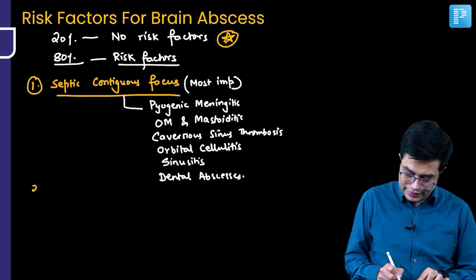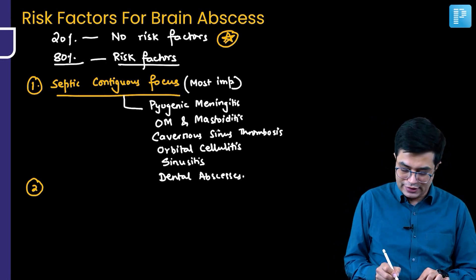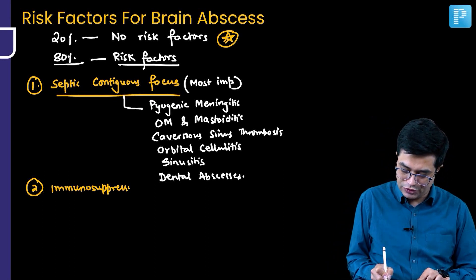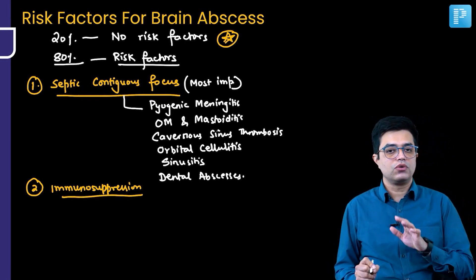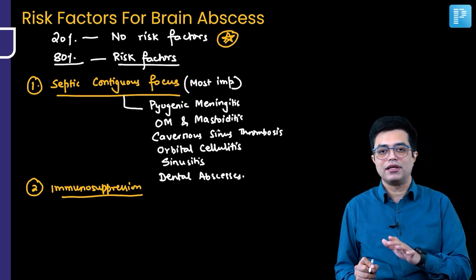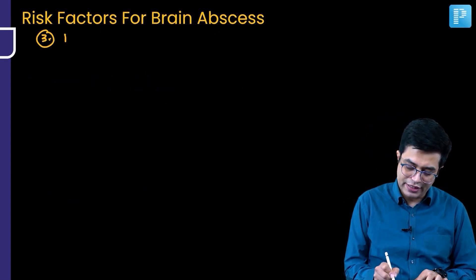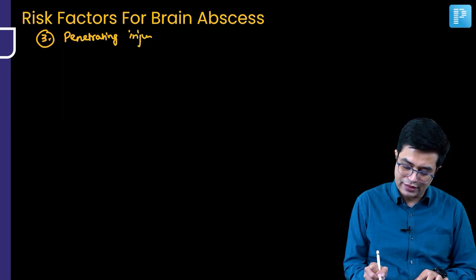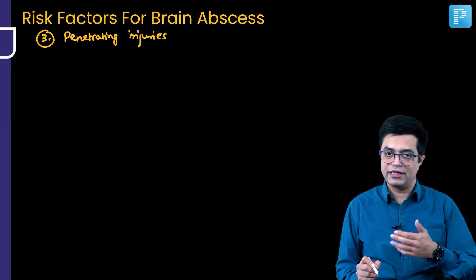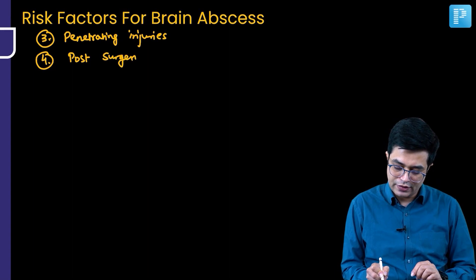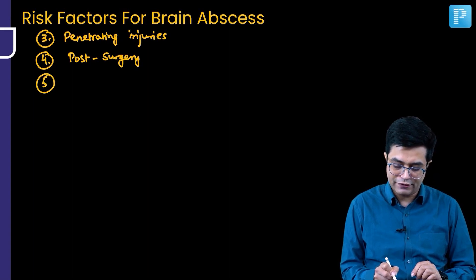The second risk factor is immunosuppression. Any type of immunosuppression can predispose a patient to brain abscess, and in these cases atypical organisms like fungi can also cause abscesses. Third, penetrating injuries — common in adults but relatively rare in children. Fourth, brain abscess can occur post-surgery.